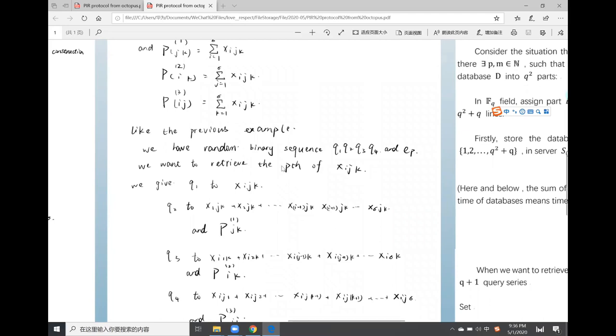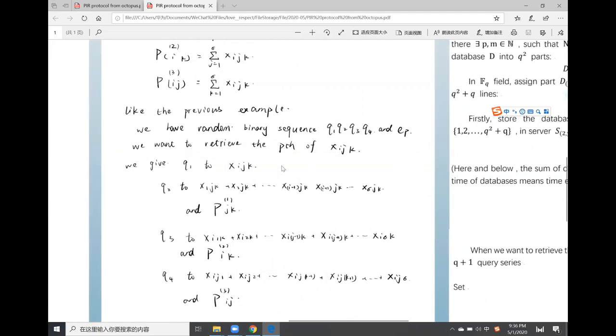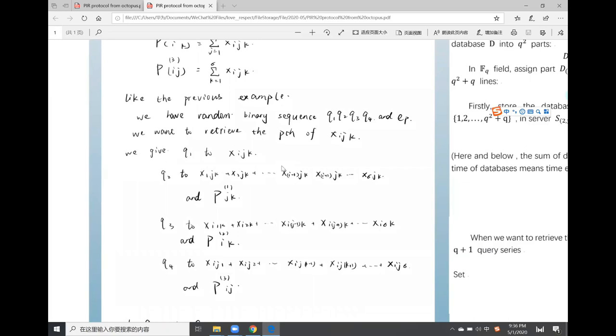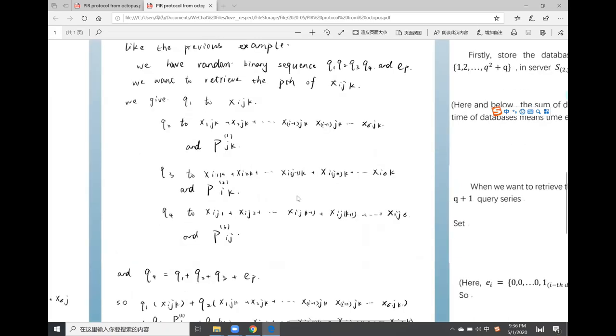Then we should generate random binary sequence q1, q2, q3, q4, and E_p, and distribute them to different parts shown in the picture.